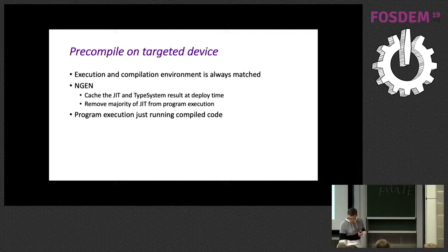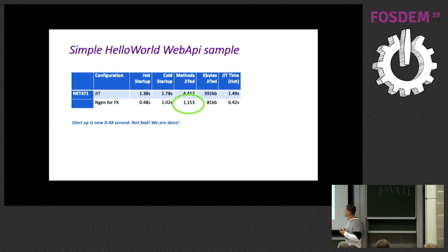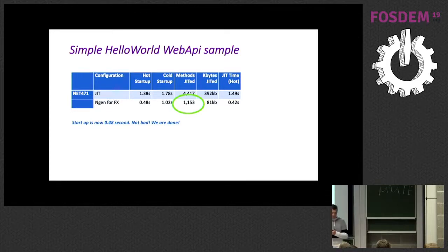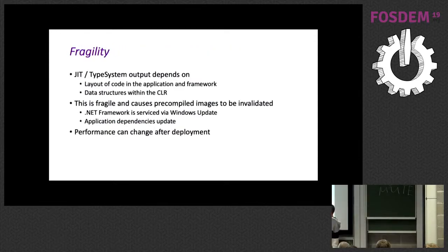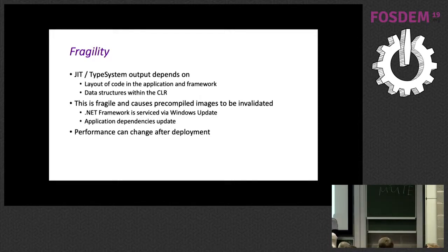The startup time changed drastically — improved by roughly two-thirds. This solution was delivered for .NET 1.0. Two months before we shipped, we found out our performance was not acceptable. One developer named Koshan solved it, and we just shipped in time.